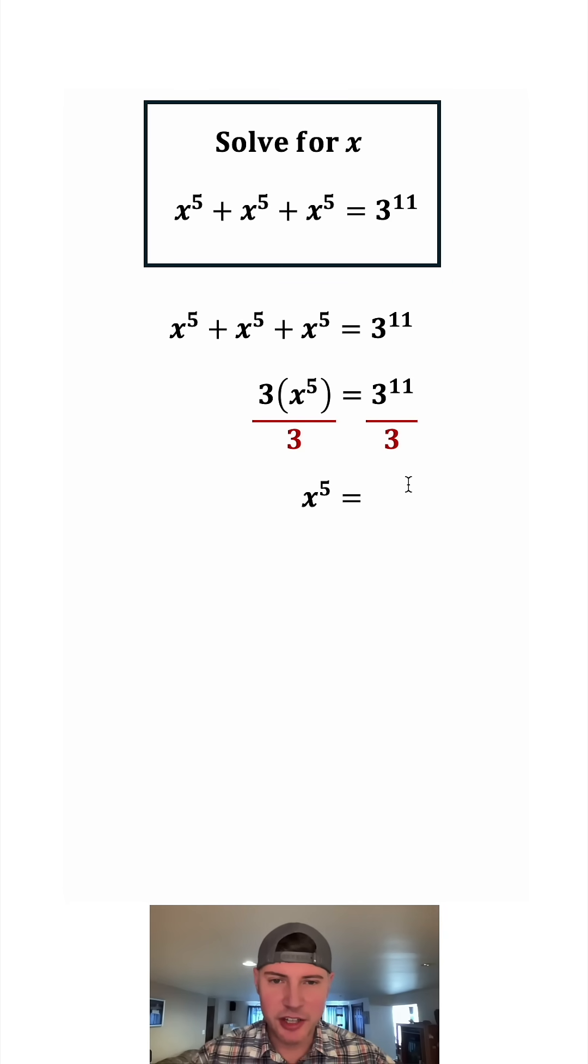And on the right hand side we can change this three into three to the first power. And anytime you have a power divided by a power and the bases match, you can subtract the exponents. So this becomes three to the eleven minus one. And eleven minus one is equal to ten.